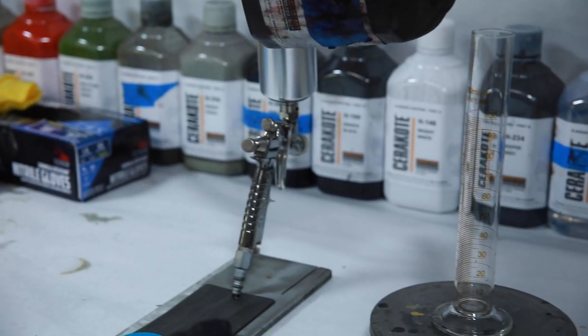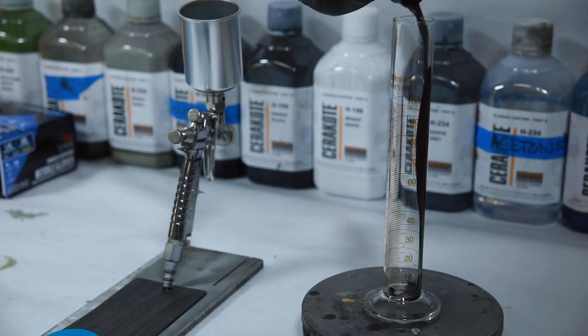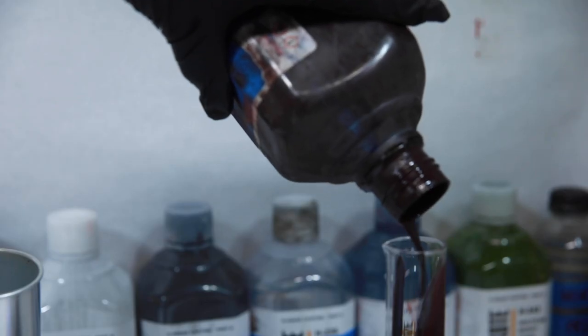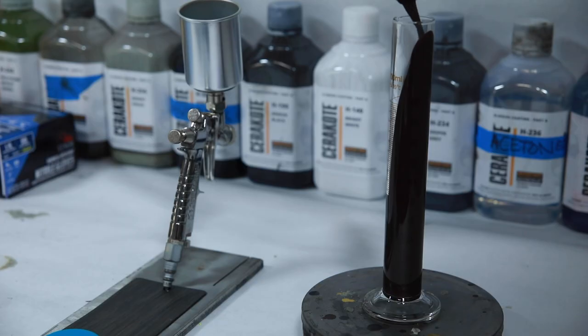Step 7: The parts are immediately prepped in the booth to minimize the potential of contamination occurring between the hanging and coating stages.